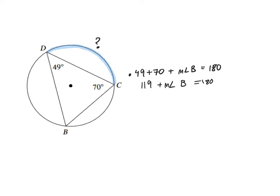So we have 119 plus the measure of angle B equals 180. So that means that B must be 61 degrees. I'm going to write that on my diagram.